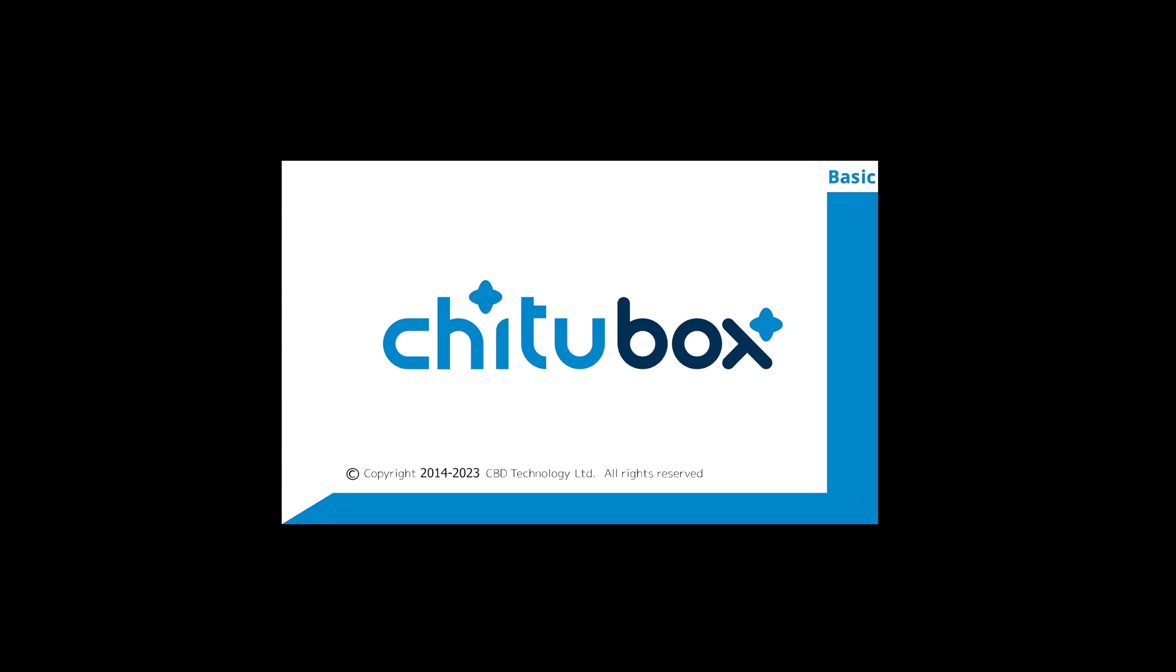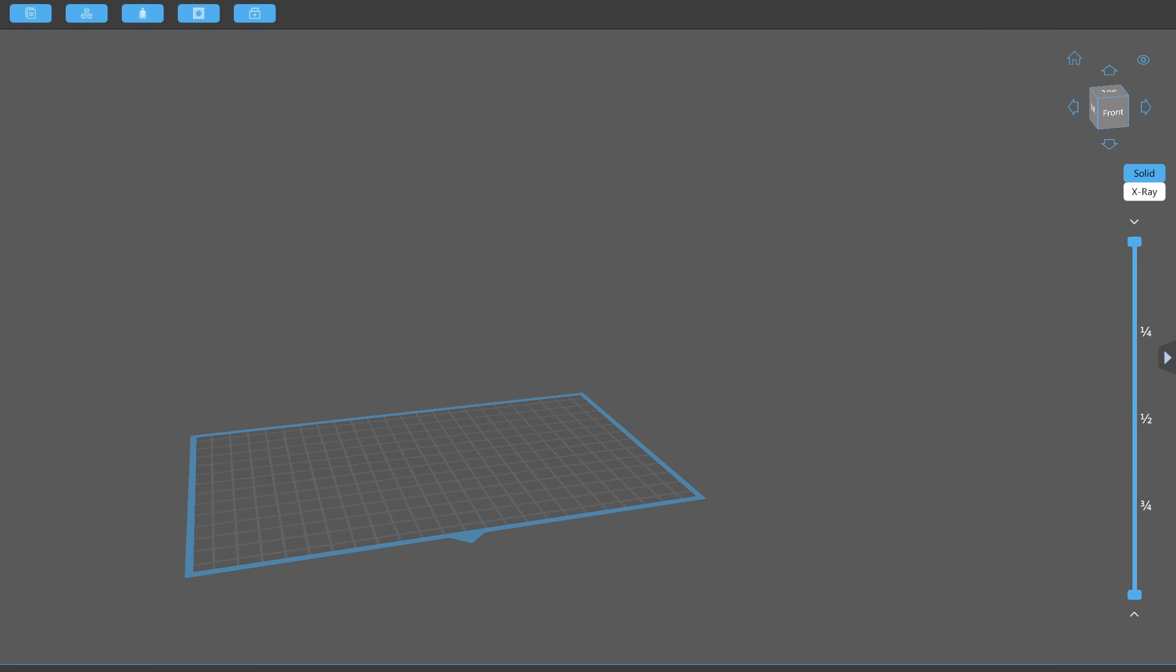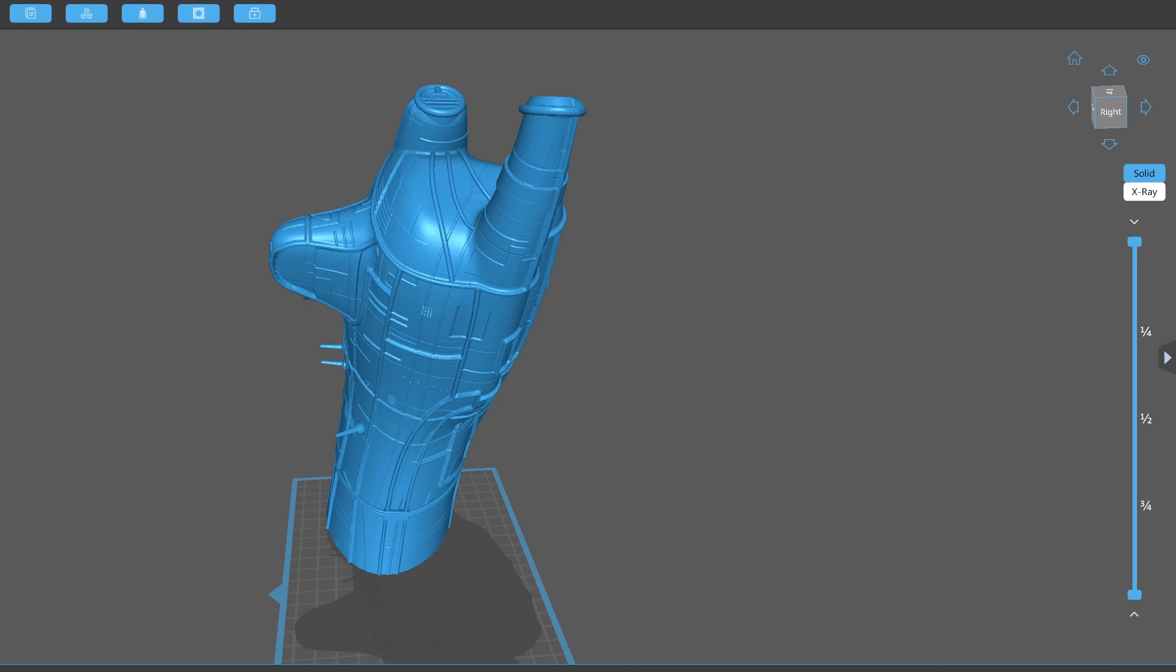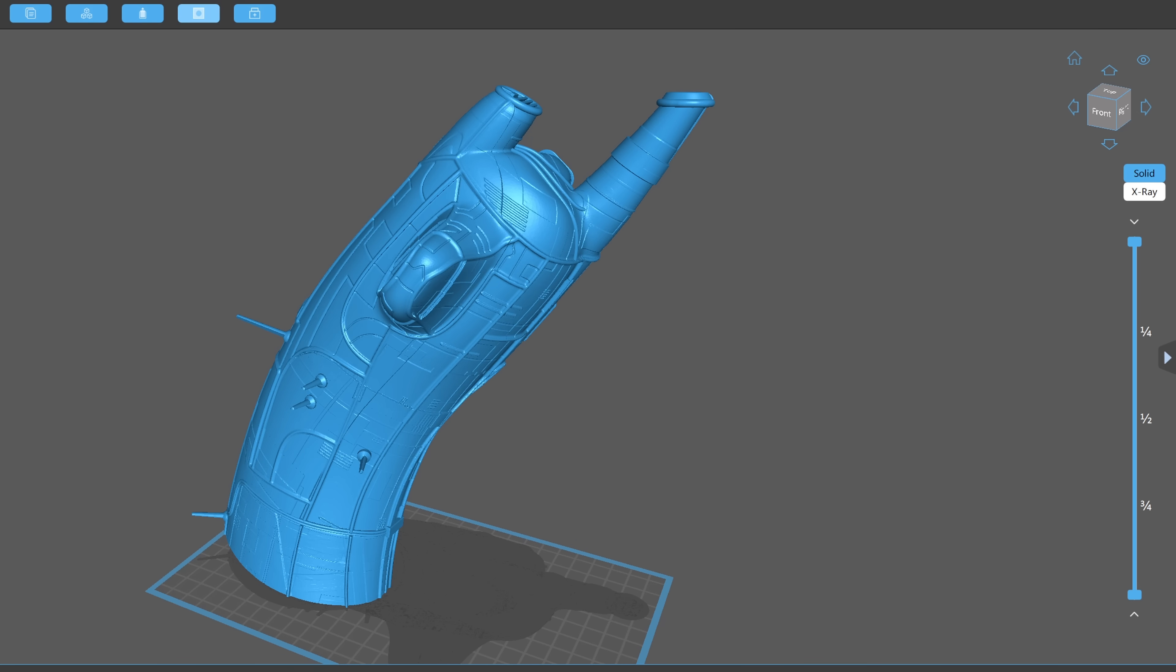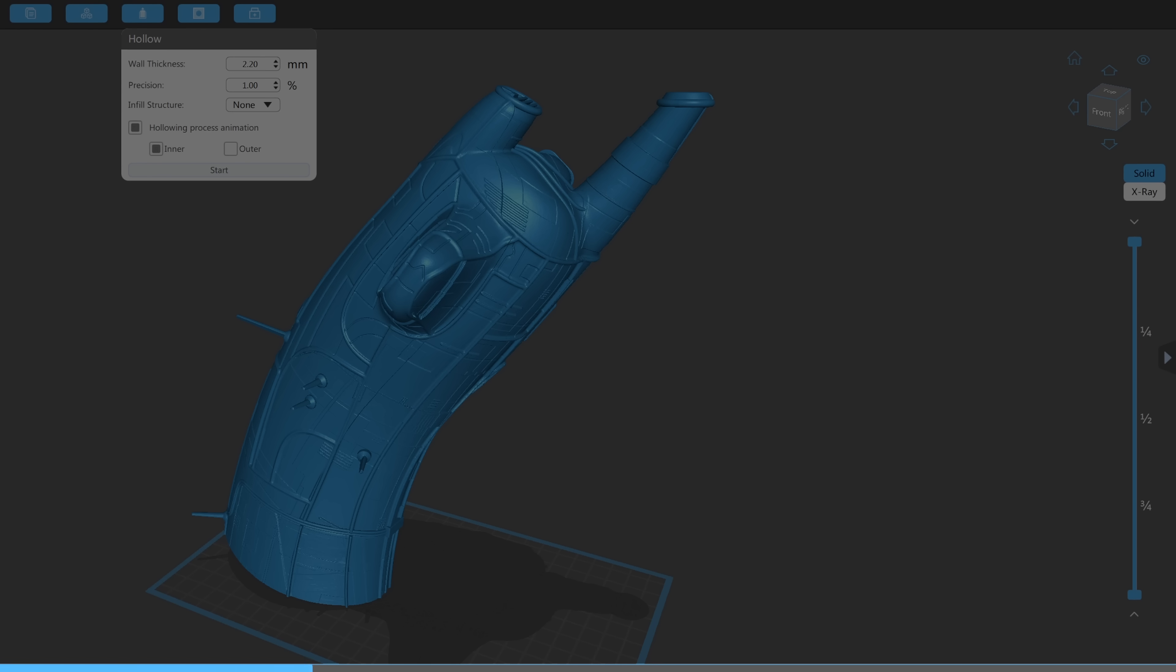So, after downloading our STL files, we open ChituBox. This is one of many software package options out there that will help us set up and slice our files ready for 3D printing. Here we can load our model pieces individually and scale them to our preferred size. In our case, we increased the scale up to two and a half times that the model was intended to be printed at, which is the maximum size we can fit on the build plate of our resin printer.